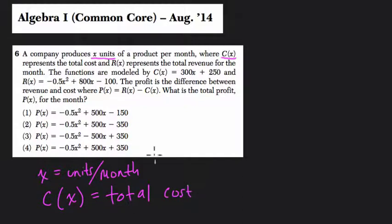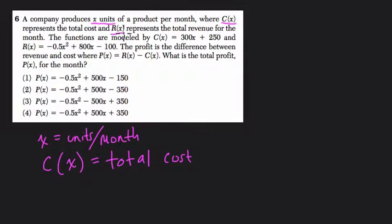And then we have another function, r of x, represented by the total revenue. R of x equals total revenue for the month. So we have cost and revenue. Revenue is the money coming in. Cost is the money that you're losing to make your product. So when you make something, it costs something to make it. That's what c of x represents. And then you sell it, you get some income for it. That's r of x, or revenue.